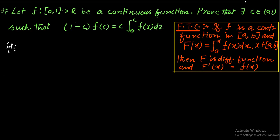Let f: [0,1] → R be a continuous function. Prove that there exists c ∈ (0,1) such that (1-c)f(c) = c∫₀ᶜf(x)dx, or with variable t: (1-x)f(x) = x∫₀ˣf(t)dt.